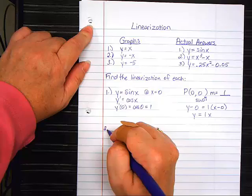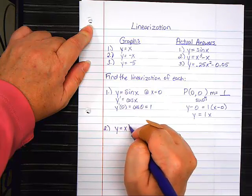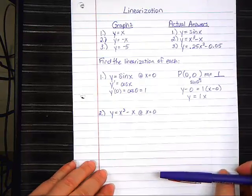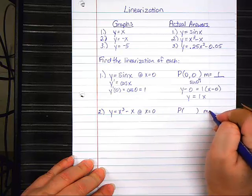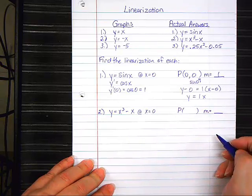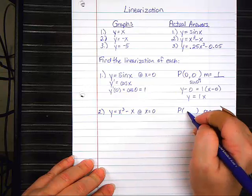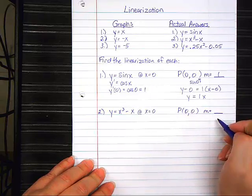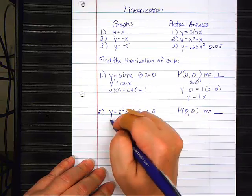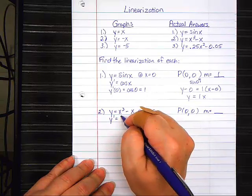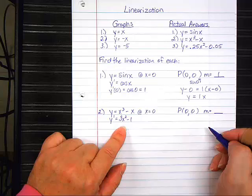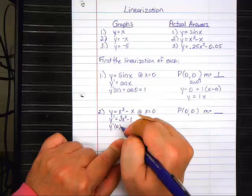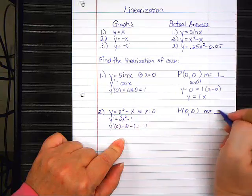Number two. Y equals X cubed minus X at X equals zero. Same process. Point, slope. What do I know? I know the point is zero. What is the Y value that goes with that? Zero again. Now, to find the slope, I need to take the derivative, which is 3X squared minus one. And then, when I plug zero into here, what do I get? Negative one. There's my slope.